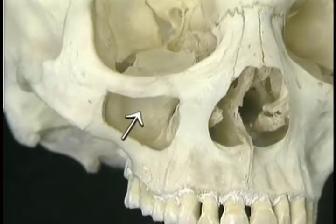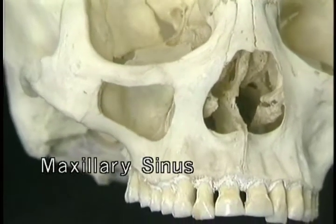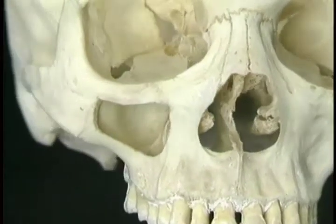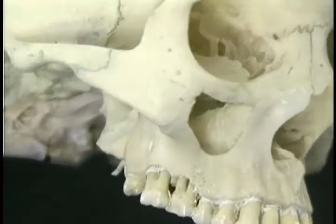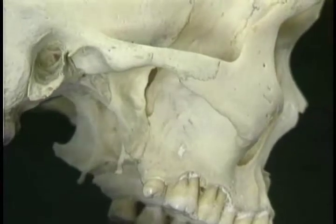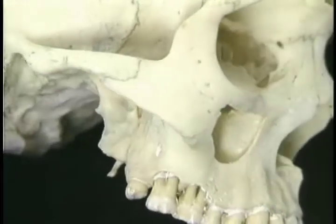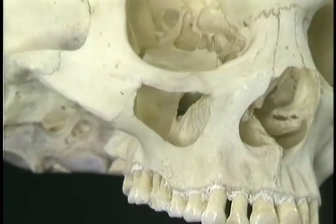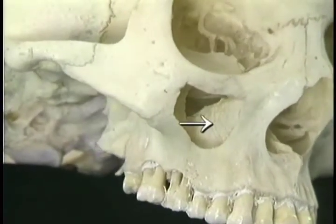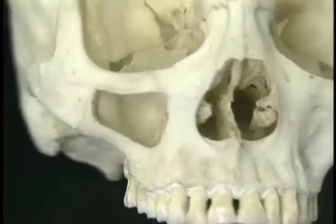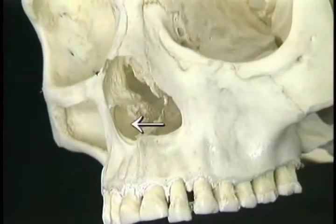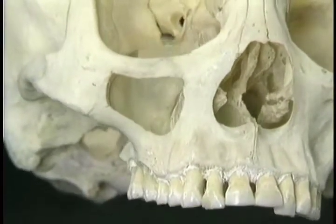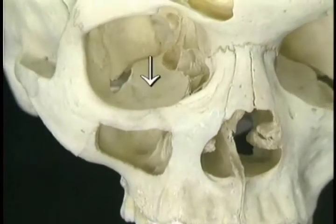Here's the cavity for the right maxillary sinus, also known as the maxillary antrum. It extends backwards to the part of the maxilla that borders the pterygomaxillary fissure, and downwards almost to the root of the upper molar and premolar teeth. The medial wall of the maxillary sinus is also the lateral wall of the nasal cavity. Its roof forms a large part of the floor of the orbit.